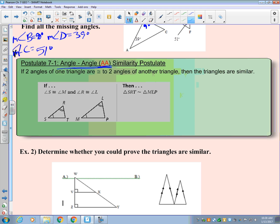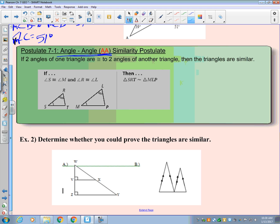I like similar triangles because unlike congruent triangles where we could not use angle, angle, angle, here we can use angle, angle. And we don't even need the third angle.